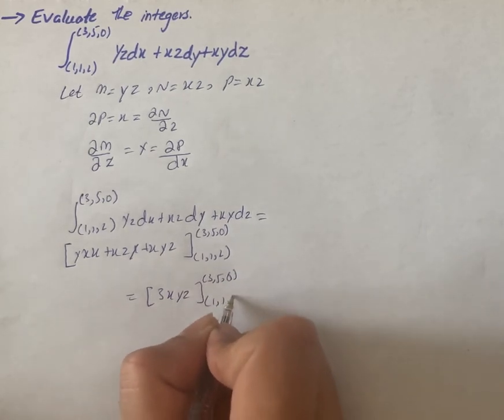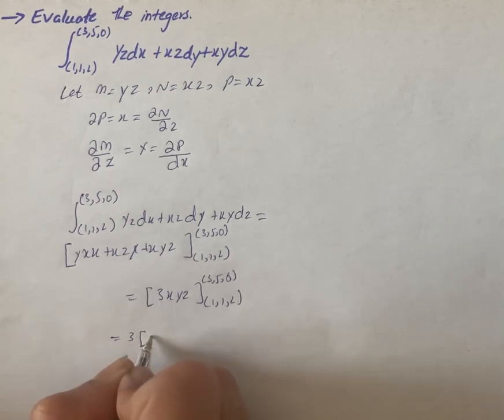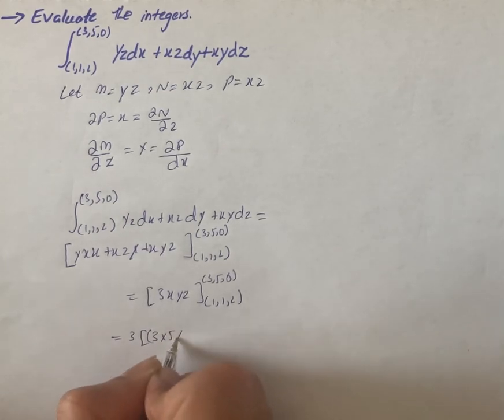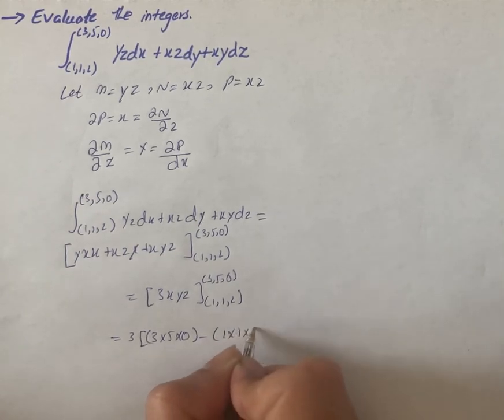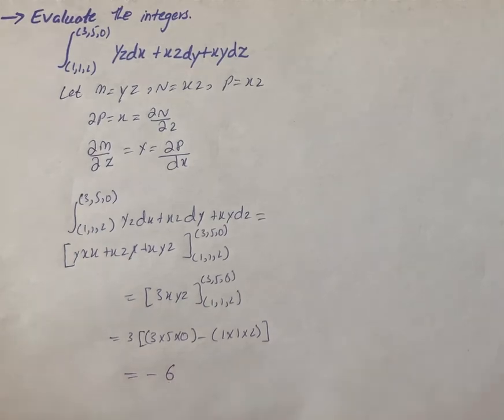one one two. So we also can write it as 3 into (3 × 5 × 0) - (1 × 1 × 2). So our answer is minus 6 for the given situation.